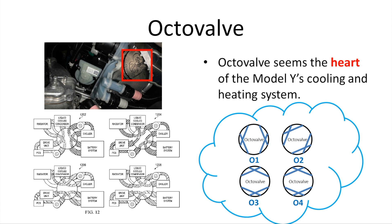It is an octopus with a snowflake on its head. Here is a schematic of the octa valve from the patent. As you can see, there are four different coolant loops involved within the octa valve: the radiator coolant loop, the chiller coolant loop, the battery coolant loop, and the drivetrain coolant loop. By changing the mode of the octa valve, the four loops can form two different coolant loops, as shown in the upper left graph, or they can all be connected in series, as in the upper right graph.